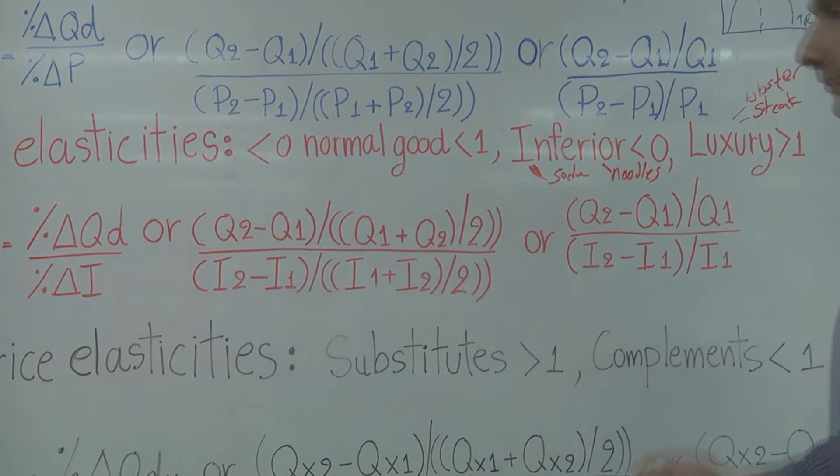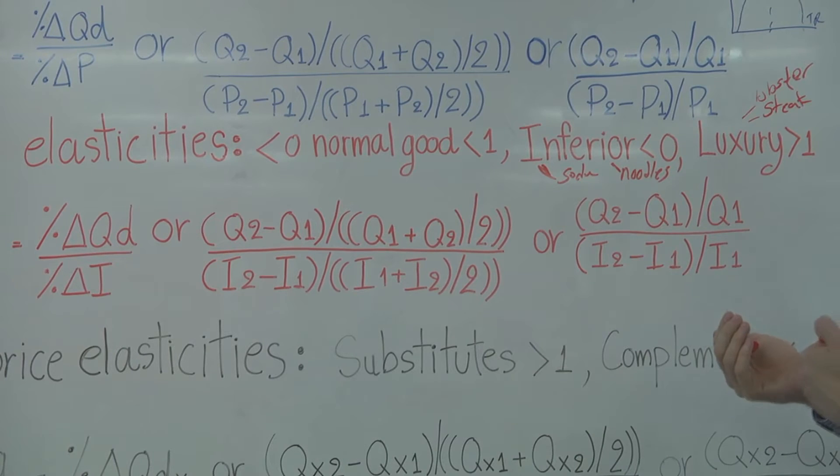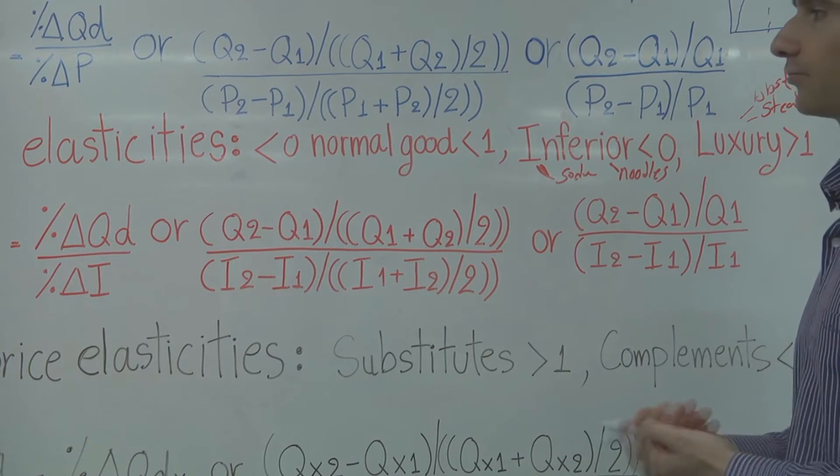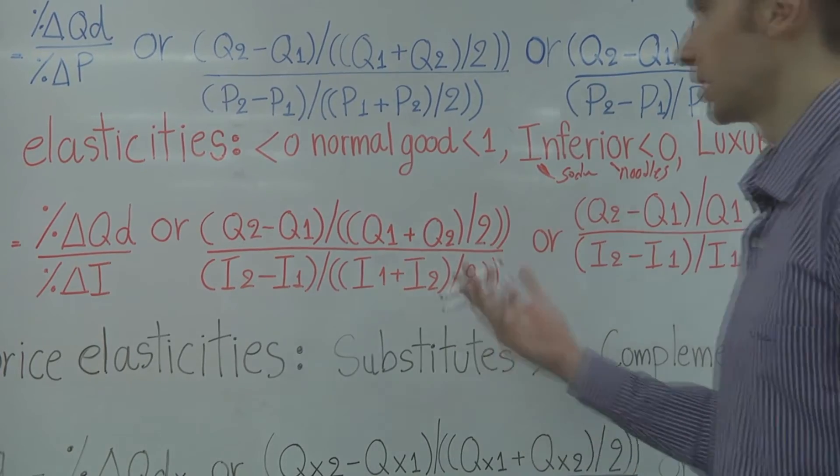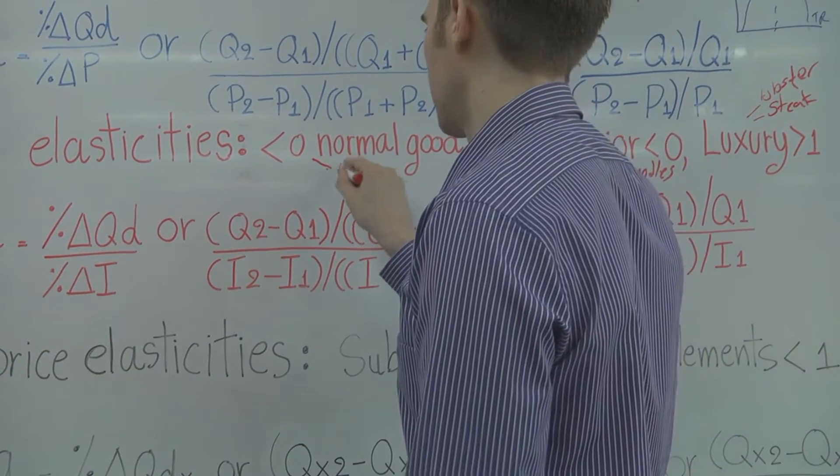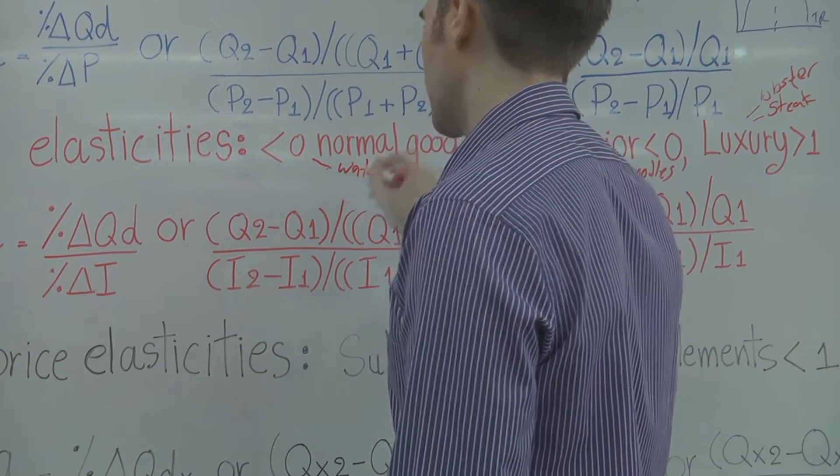A normal good, if my income goes up or down, it's not affecting my level of consumption. It may be something like water, drinking water.